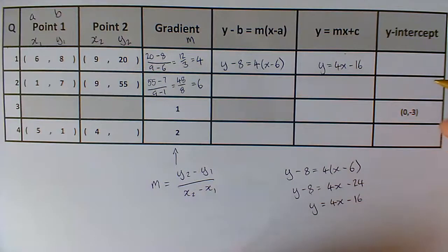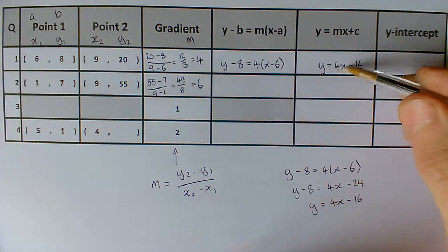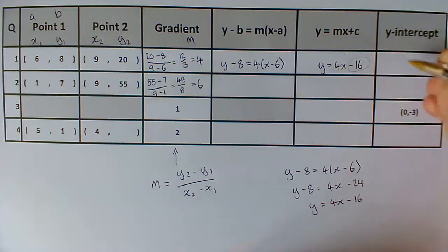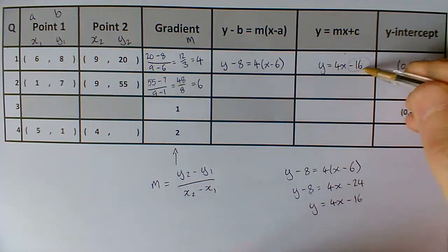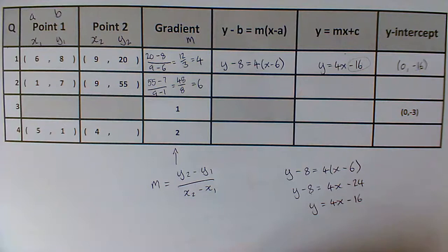Now, the final thing that we can do here is we can read off our y-intercept. Remember, our y-intercept is mx plus c, so this bit at the end is our y-intercept. So, our y-intercept here is 0 minus 16, because minus 16 is the value without an x, and therefore that's our y-intercept here. Great. So, have a go at just finishing off this row. So, maybe pause the video and finish that row off and check you've understood. And then I'll run through that in just a moment.